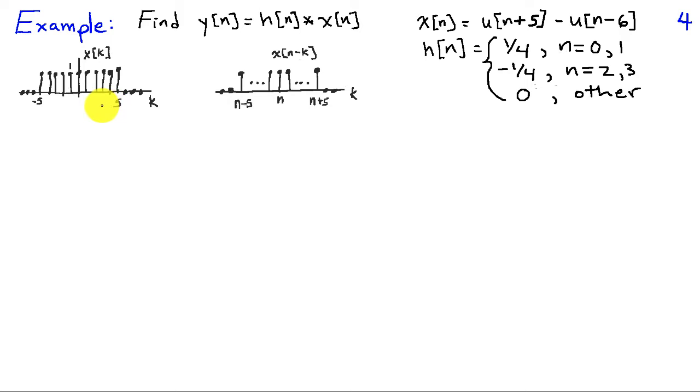And then I'll shift it by n steps. And that puts what was at 0 to be located at time n. And then the tail edge here goes from time minus 5 to time n minus 5. And the leading edge goes from time 5 to time n plus 5. So this is x of n minus k.